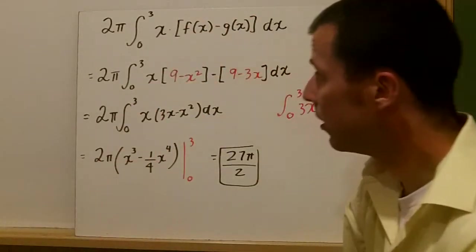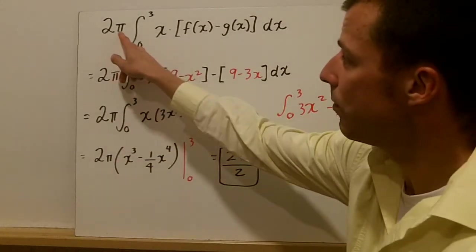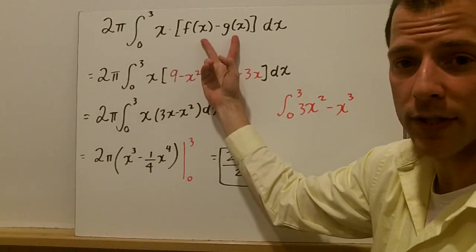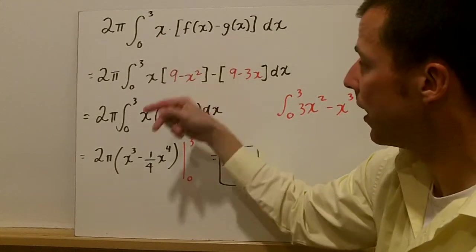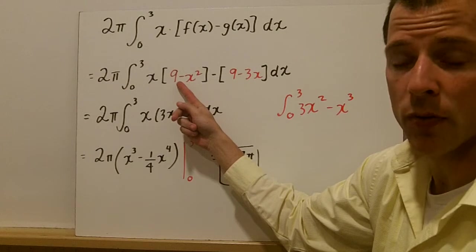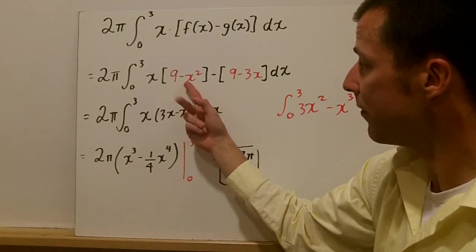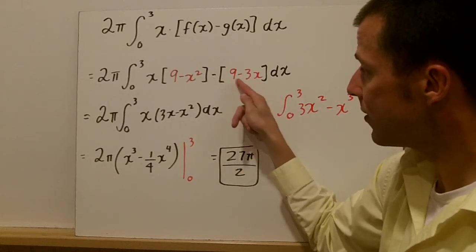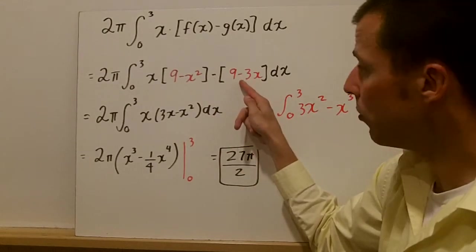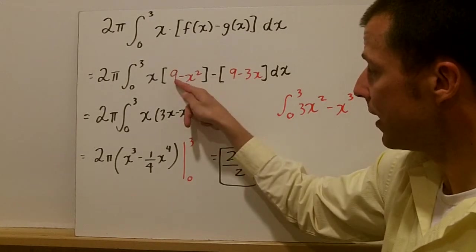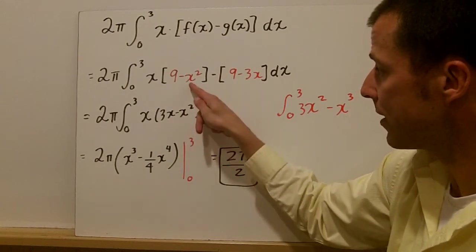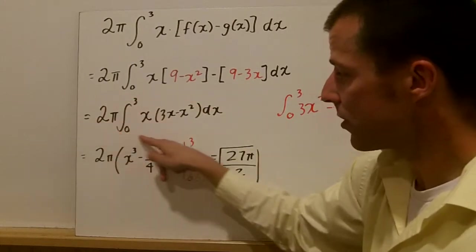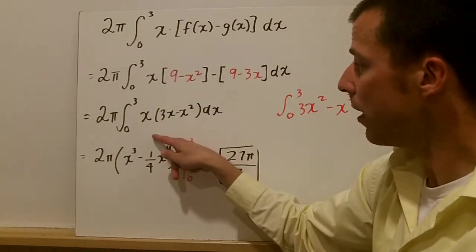Now we have to integrate. We set up our integral from 2π times the integration from 0 to 3 of x times the difference of our two functions. In this case, 9 minus x squared is the larger function, and so that's f(x) minus g(x), and so we have to subtract off this second polynomial. Really, minus 9 plus 9, that cancels, and we're going to be left with minus x squared plus 3x, and that's going to be timed x here. There's our simplified integration.